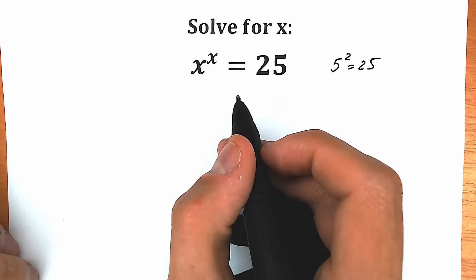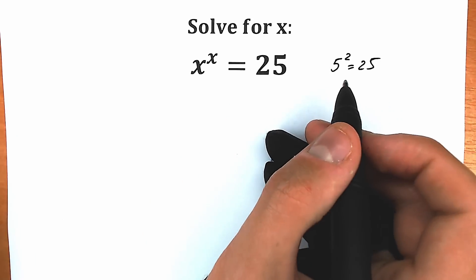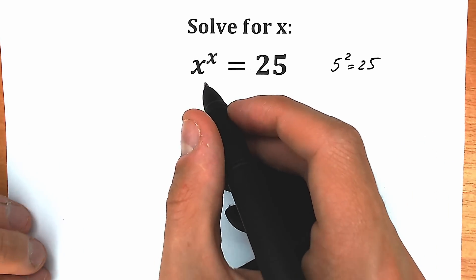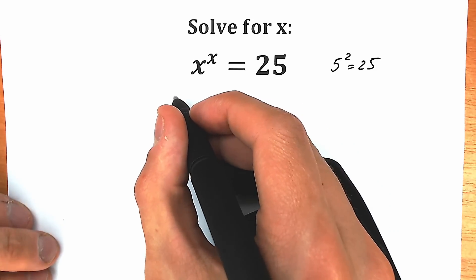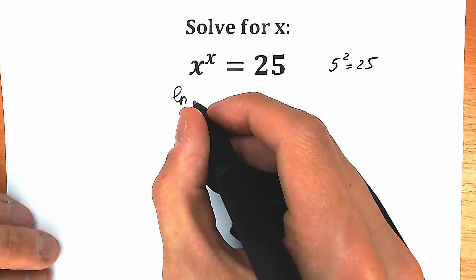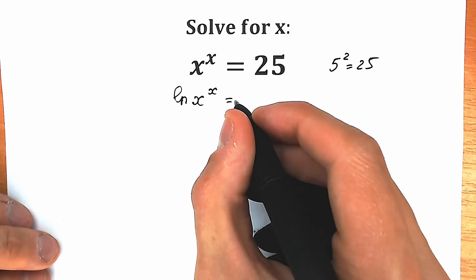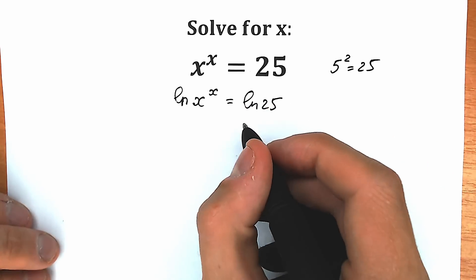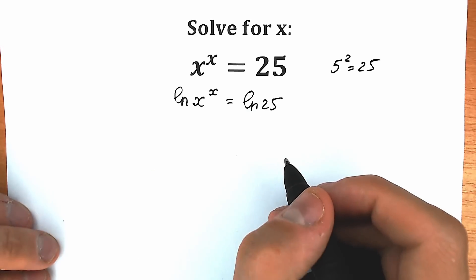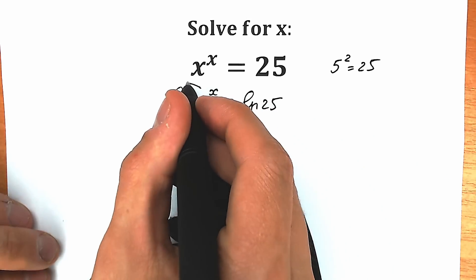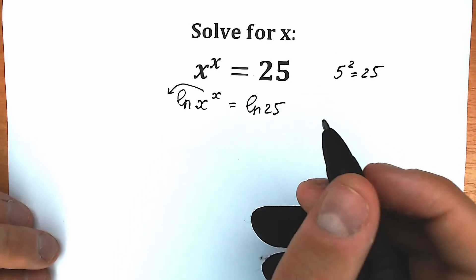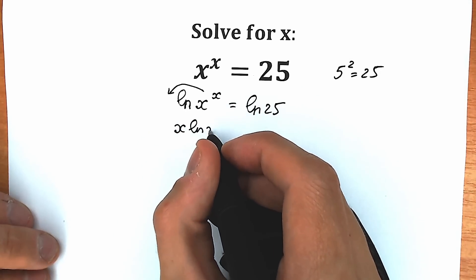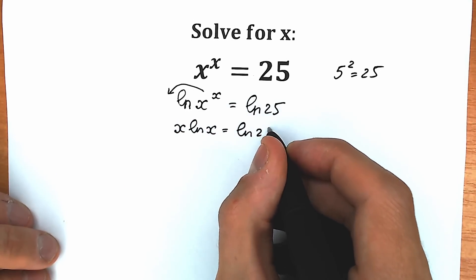So we have x to the x equal to 25, and x is not equal to 5, x is not equal to 2, as you can see. So let's try to solve it. First of all, I suggest you apply a natural log on both sides. So we have natural log of the left side: natural log of x to the power x, equal to natural log of 25. We just apply natural log on both sides. Right now this x will come down, that's why we apply natural log. So we have x times natural log x equal to natural log 25.